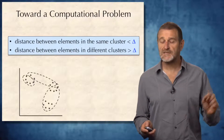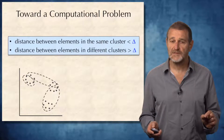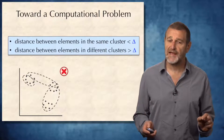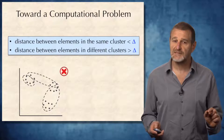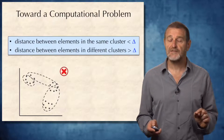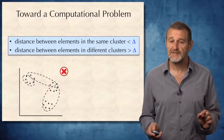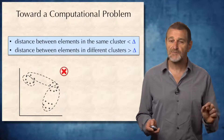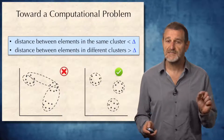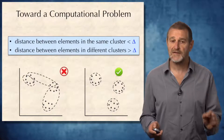For example, consider whether a given clustering satisfies the good clustering principle. Of course not, because there are elements in the same cluster that are further away from each other than elements in different clusters. However, this problem is easy to fix — here is a clustering that does satisfy the good clustering principle.